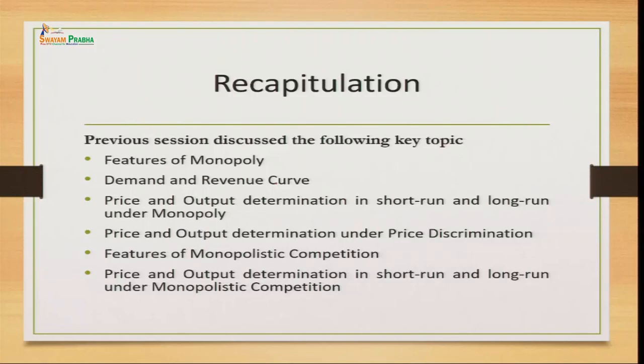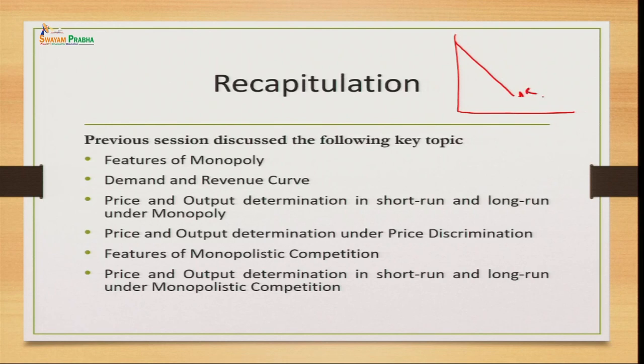The entry under this market has a restriction and the monopolist also has an advantage of price discrimination. He is the price maker. He can make independent decisions regarding the prices and the output of the firm, and he can also discriminate among prices where he can charge different prices for the same commodity from different consumers. Thereafter, we talked about the demand and revenue curve of this monopoly market. Demand in the monopoly market is highly inelastic because the seller is a single seller and does not have a close substitute. The demand curve of the monopoly market is downward sloping.